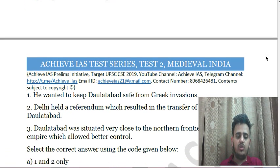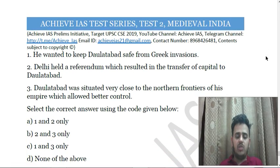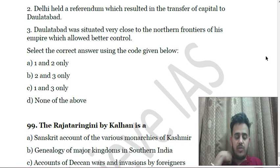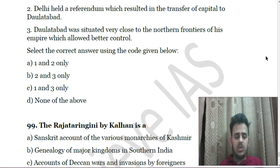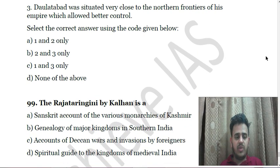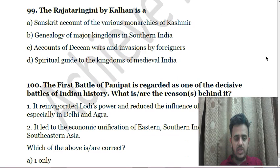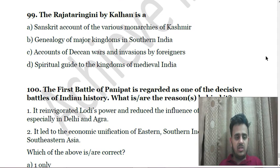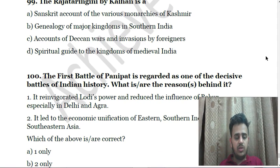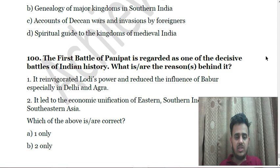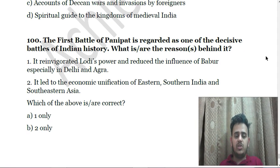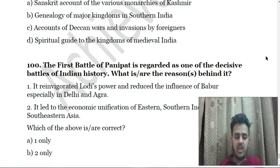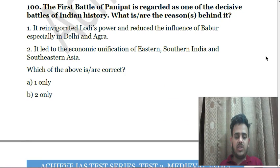Next: The Sur Empire may be considered in many ways a continuation and culmination of the Delhi Sultanate. Which of the following were reforms introduced by Sher Shah? First, he repealed the land revenue system to promote a welfare state; Second, restored the old imperial Grand Trunk Road from the river Indus in the west to Sonargaon in Bengal; Third, customs duties were abolished on goods to promote trade and commerce. Next: What was the reason behind Muhammad bin Tughluq's transfer of capital from Delhi to Daulatabad? First, he wanted to keep Daulatabad safe from Greek invasion; Second, Delhi held a referendum which resulted in transfer of capital; Third, Daulatabad was situated very close to the northern frontiers of his empire which allowed better control.